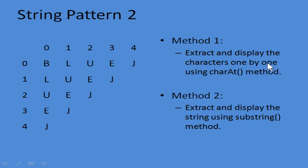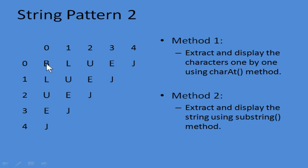Now let's go to the second pattern, which is also similar — you have two methods: charAt and substring. Observing the pattern: 'BlueJ' appears in the first row, but in the second row the starting character is missing while the ending value stays the same. All rows end with the same character but have different start values. The pattern is increasing, so i goes from 0 to 4, increasing. The j value is also increasing, ending at 4, but the start value is i — so j = i, j <= 4, j++.